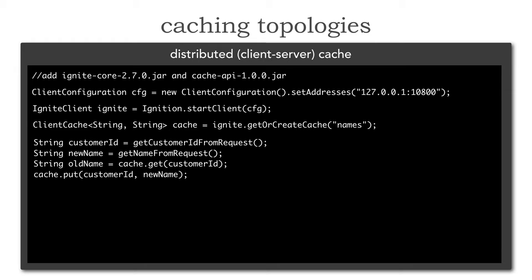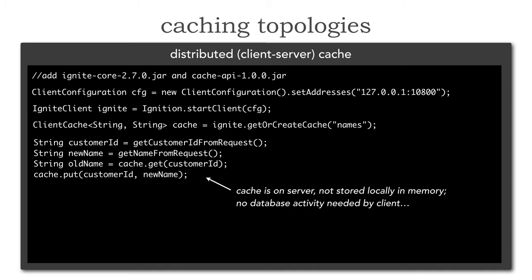Notice the interesting thing here — this code looks very similar to the code we saw in lesson 76. If you didn't see that, I'd encourage you to look at that lesson first to get an idea of what a single in-memory data grid looks like. But unlike lesson 76, the cache here is on the server. Although it appears that the cache is local because I'm just saying cache.get and cache.put, what's actually happening is that information is not stored locally in memory but rather uses that proprietary protocol to get to that distributed cache.